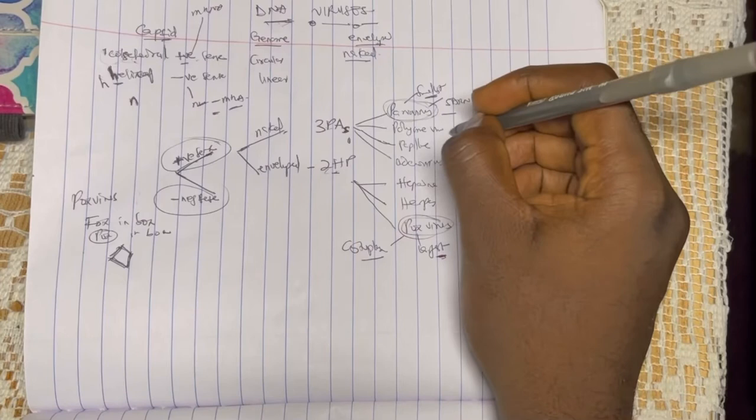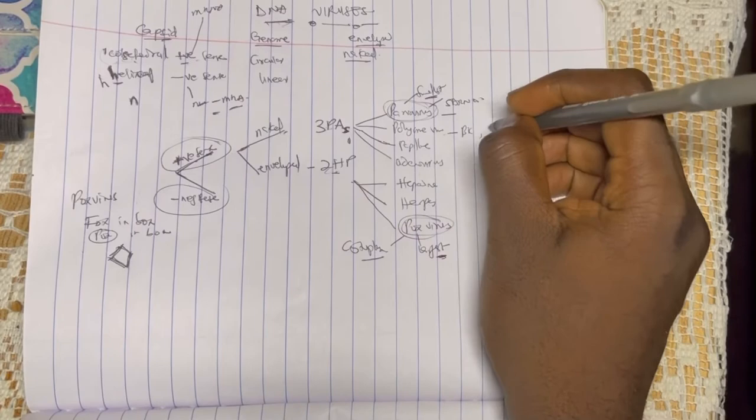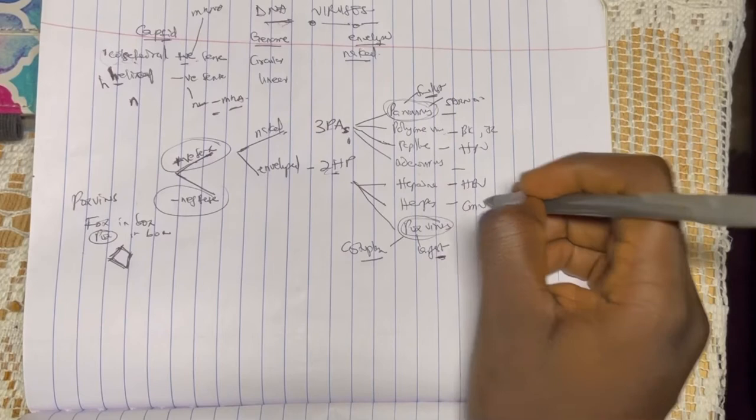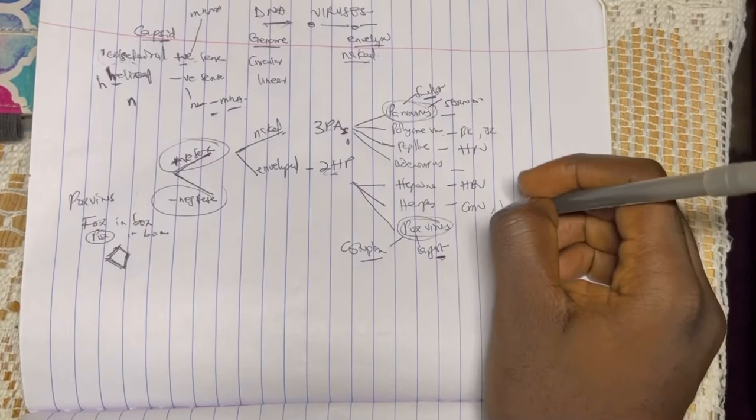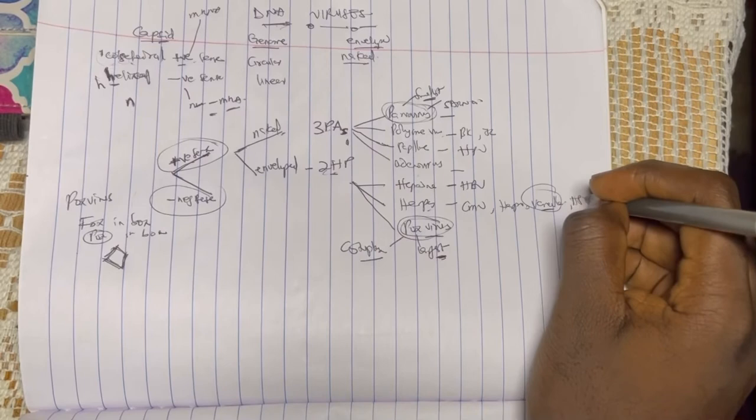Breaking them down: your polyoma viruses are your BK and JC virus; papilloma virus is HPV; adenovirus; hepadna is HBV; herpes viruses include CMV, varicella which is your chicken pox—chicken pox is herpes, not pox—HSV-1, HSV-2; and your pox viruses are smallpox, cowpox, and molluscum contagiosum.